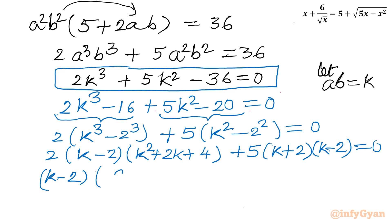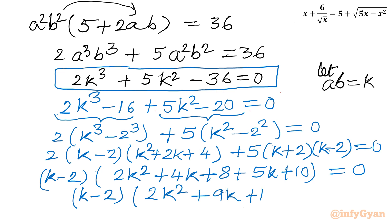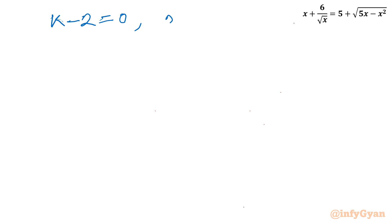(k − 2) is overall common, so factoring out: (k − 2)[2k² + 4k + 8 + 5k + 10] = 0, which simplifies to (k − 2)(2k² + 9k + 18) = 0. So we have two brackets; let us set each equal to 0.